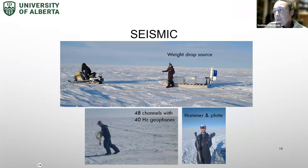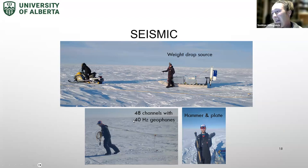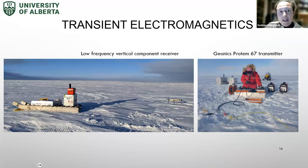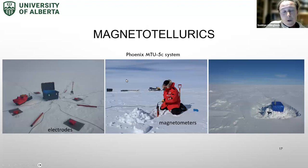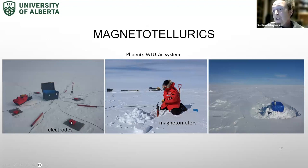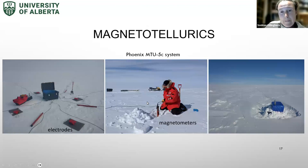For the seismic setup we had a weight-drop source on a sledge towed by a snowmobile, a hammer-and-plate source (which Tim managed to break on the last day — so always bring a spare), and 48 channels with 40 Hz geophones. For transient electromagnetics we used a low-frequency vertical component receiver and the Geonics ProTEM 67 transmitter, powered by two parallel generators pumping 25 amps around a 500-meter loop. For magnetotellurics, a passive method, we used the Phoenix MTU-5C system with four electrodes and X, Y, Z magnetometers, left running for 24 hours at each station.